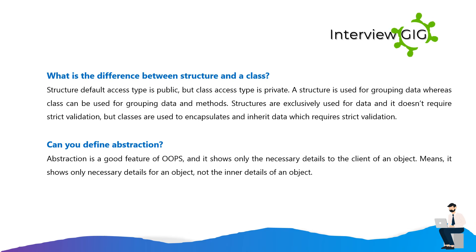What is the difference between structure and a class? Structure default access type is public, but class access type is private. A structure is used for grouping data whereas a class can be used for grouping data and methods. Structures are exclusively used for data and don't require strict validation, but classes are used to encapsulate and inherit data which requires strict validation. Can you define abstraction? Abstraction is a good feature of OOPS and it shows only the necessary details to the client of an object — it shows only necessary details for an object, not the inner details of an object.